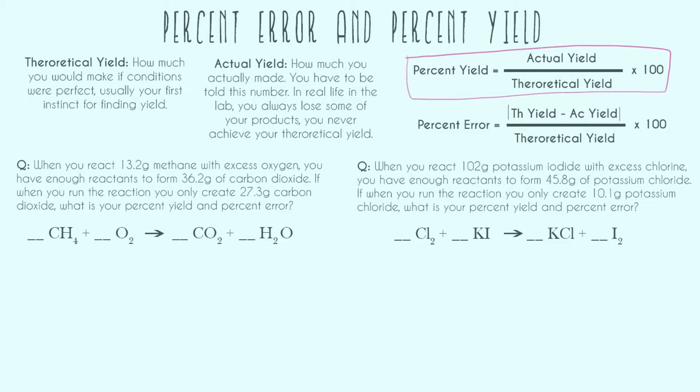And we always know how to find percent error. It's just the absolute value, that's what these bars are, of the theoretical yield minus the actual yield divided by the theoretical yield times 100. So we can see with both of these, if we have the actual yield and we have the theoretical yield, we can go ahead and plug in and then our problem's over.